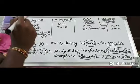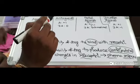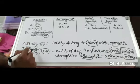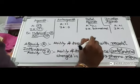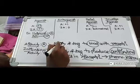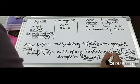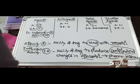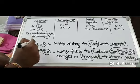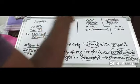Today we are going to discuss the concept of agonist, antagonist, partial agonist, and inverse agonist. For that we should know what is meant by affinity and intrinsic activity. Affinity means the ability of a drug to bind with the receptor, and intrinsic activity means the ability of a drug to produce conformational changes in the receptor to produce pharmacological responses. Based on affinity and intrinsic activity, we differentiate these four drug types.